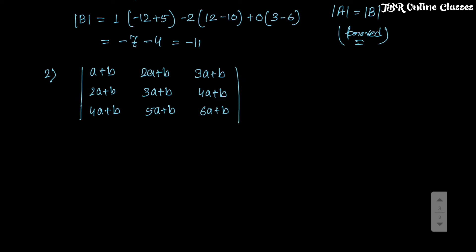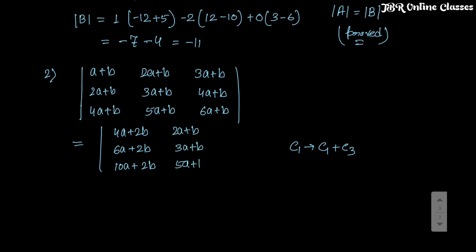For this problem we apply row/column operations. In the first column we have (a+b), (2a+b), (4a+b) and in the third column (3a+b), (4a+b), (6a+b). Apply the operation C1 → C1 + C3: the new first column entries become 4a+2b, 6a+2b, and 10a+2b. The second and third columns remain the same.